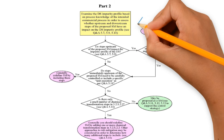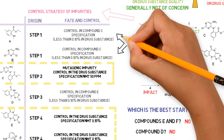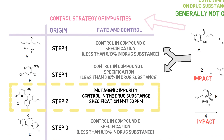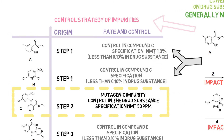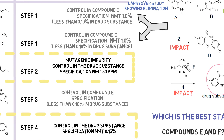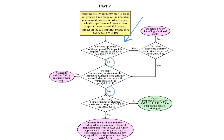Here, we should examine the impurity profile. Do the steps upstream of the starting material impact the impurity profile? In this case, step 1 does not impact the impurity profile, because both impurities generated in this step are below 0.10% in the drug substance. Even if their limit in compound C were higher than the identification threshold — 1%, for example — a carryover study may have shown that they are eliminated to less than 0.10% until they reach the drug substance. The next question is if steps upstream of the proposed starting material need to be carefully controlled — the answer would be no. There is not only a small number of chemical transformation steps. Therefore, the decision tree also confirms that compound C can be defined as the starting material.